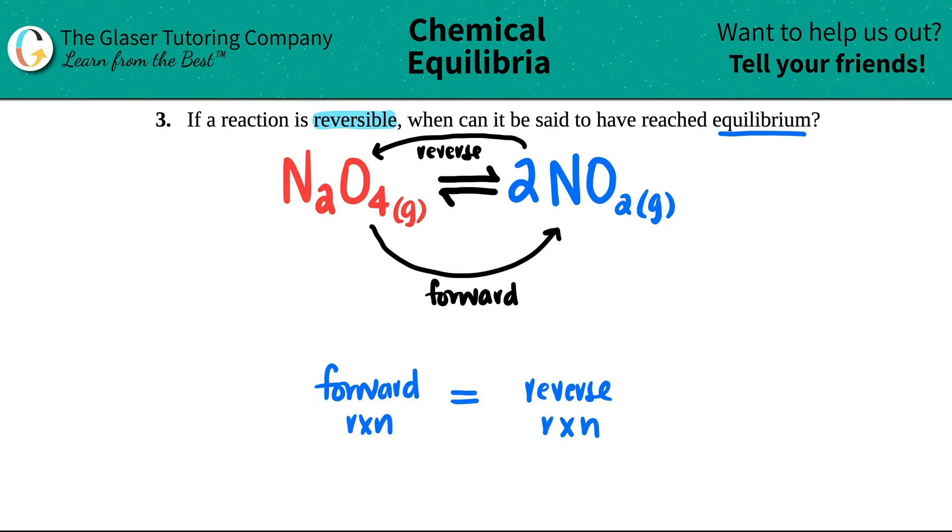Is it the concentrations? Is it the rate constants? Is it the rate? When you reach equilibrium, basically...